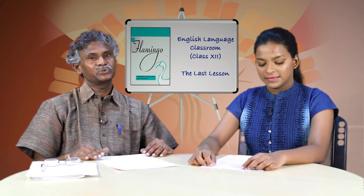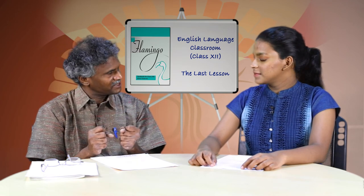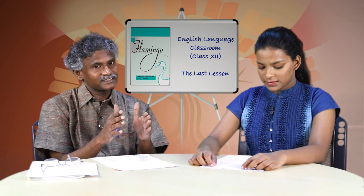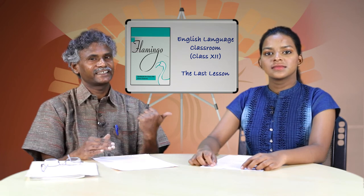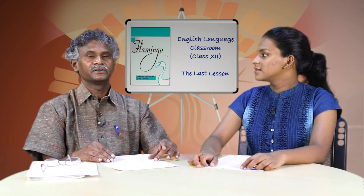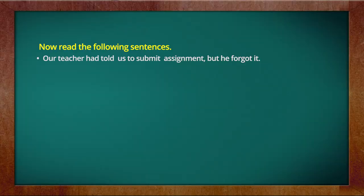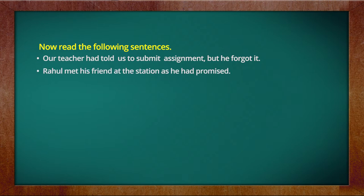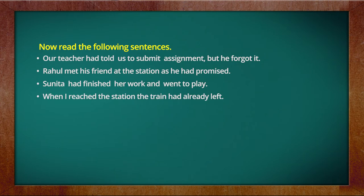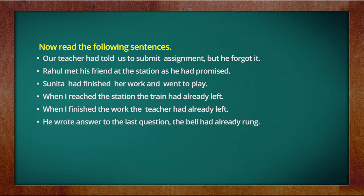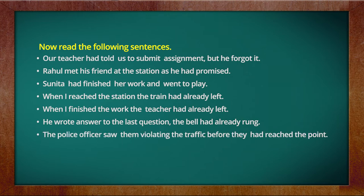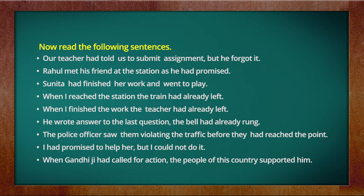Thank you Devyani for the good reading. Learners, you must have noticed the past tense form — yesterday, last week, in the morning, actions which took place in the past. We simply say them in past tense. Now I am going to show you something else to notice — this action also took place in the past. We have seen past tense; now we will be seeing past perfect tense. Let me ask Devyani to read these sentences. Our teacher had told us to submit the assignment, but he forgot it. Rahul met his friend at the station as he had promised. Sunita had finished her work and went to play. When I reached the station, the train had already left. I finished the work; the teacher had already left. He wrote the answer to the last question; the bell had already rung. The police officer saw them violating the traffic rules before they had reached the point. I had promised to help her but I could not. When Gandhiji had called for action, the people of this country supported him.